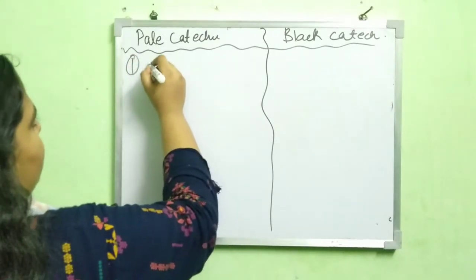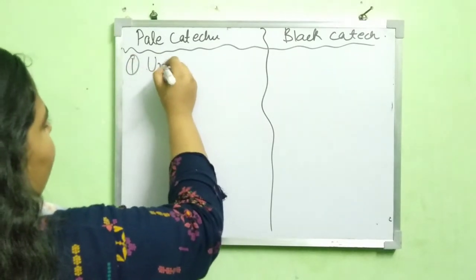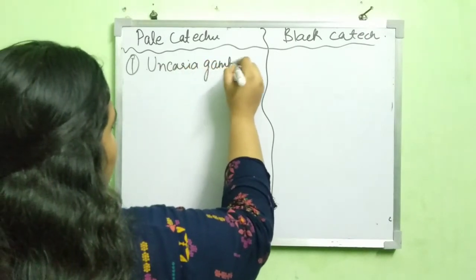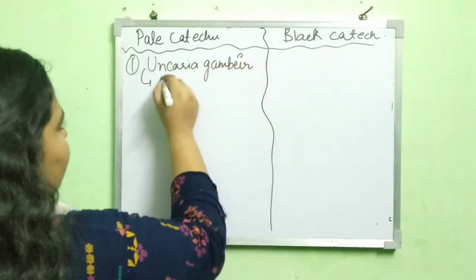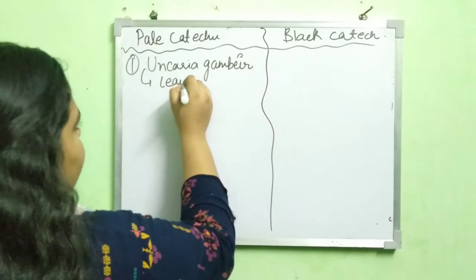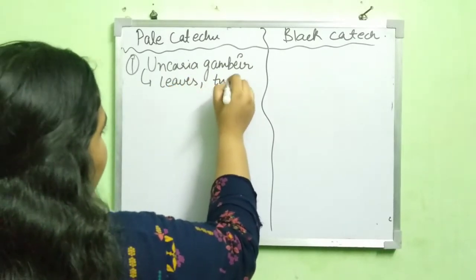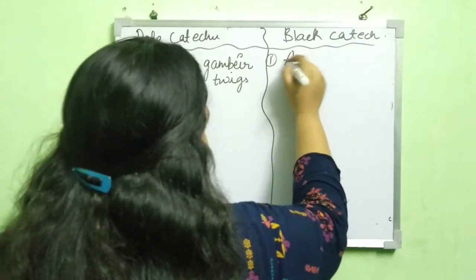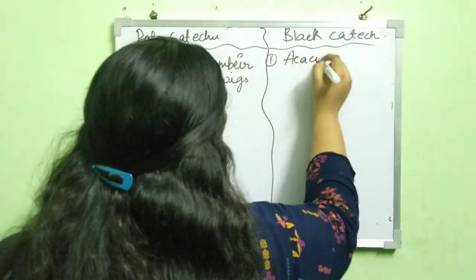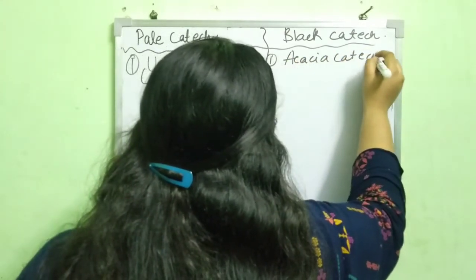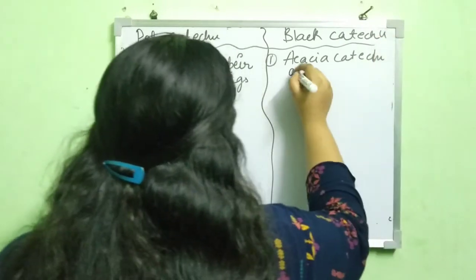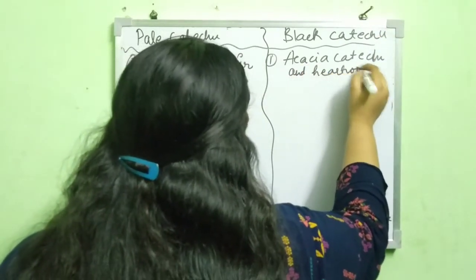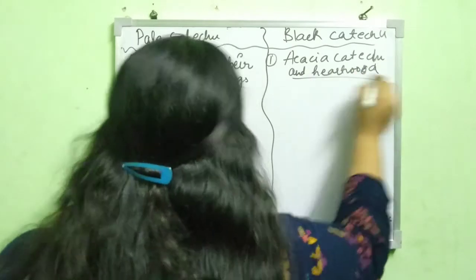The first point: pale catechu is obtained from the uncarrier plant — it comes from the plant leaf and twig. But black catechu comes from acacia; it is obtained from the heartwood. No leaf or twig is involved. It is a hardwood source.